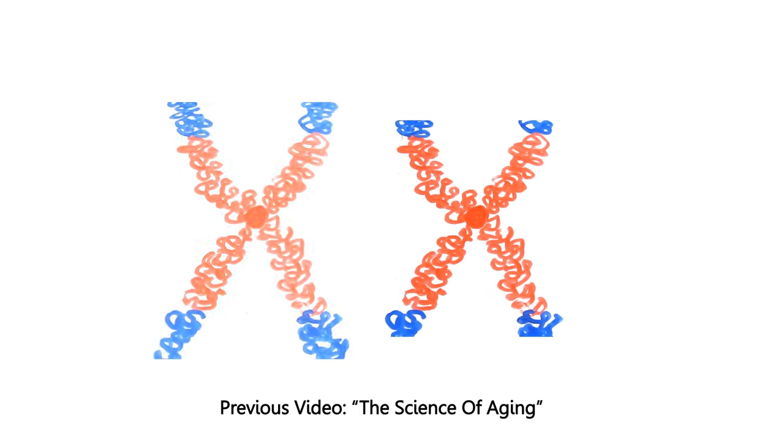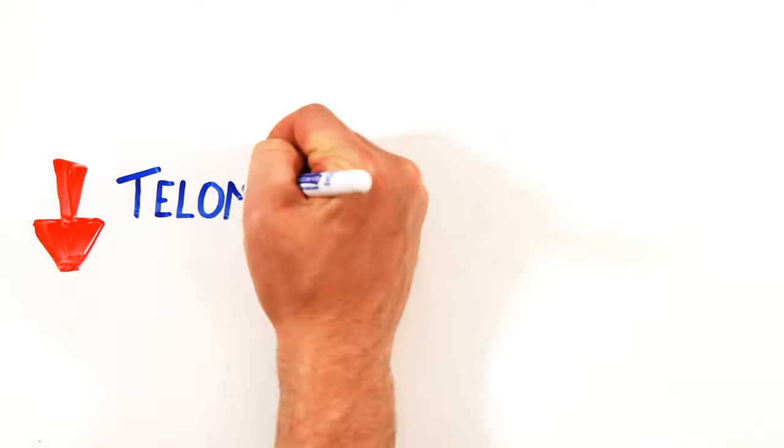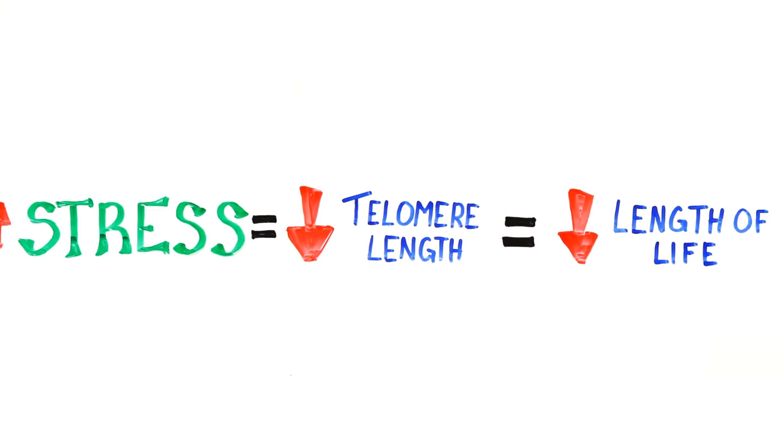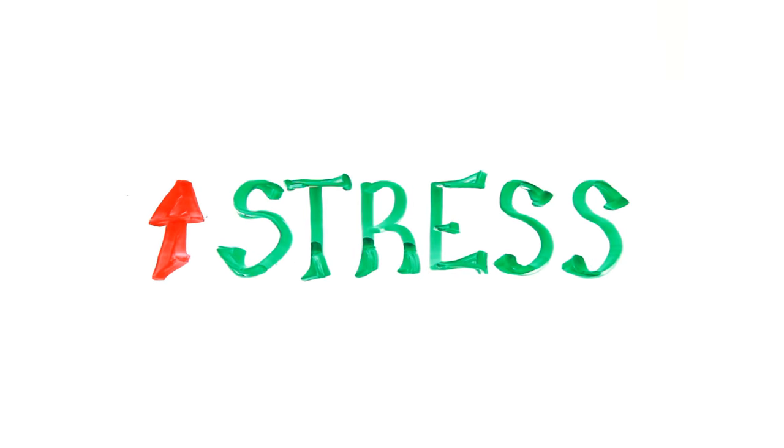Eventually, the telomeres run out, at which point the cell stops duplicating and dies. So telomeres are directly related to aging and length of life. And it turns out, stress may actually accelerate the shortening of these telomeres. But not all hope is lost for the perpetually stressed.